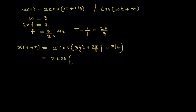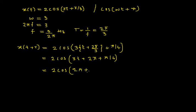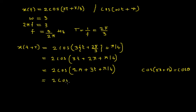Simplifying: 2 times cosine of (3t + 3·(2π/3) + π/4). The 3 and 3 cancel to give 2π, so we get 2 times cosine of (2π + 3t + π/4). Rearranging: 2 times cosine of (2π + 3t + π/4). From trigonometry, cosine(2π + θ) = cosine(θ), so this becomes 2 times cosine of (3t + π/4), which is exactly the original signal x(t). Therefore x(t + T) = x(t).